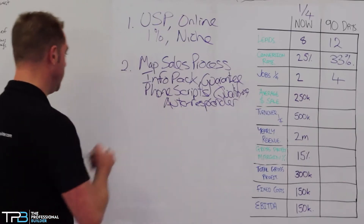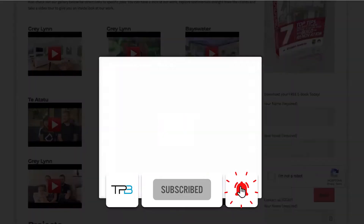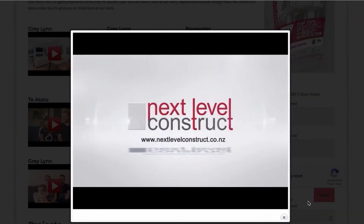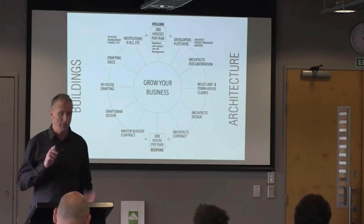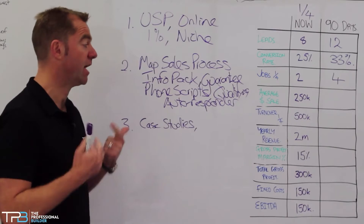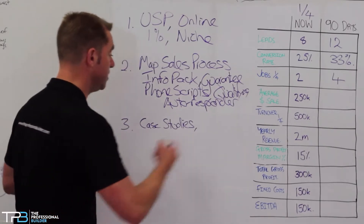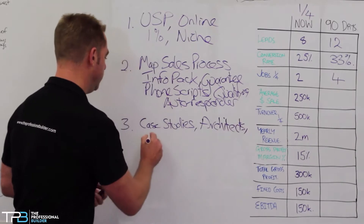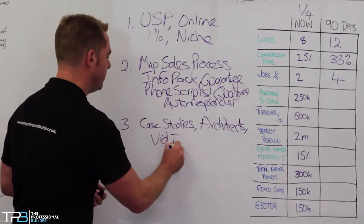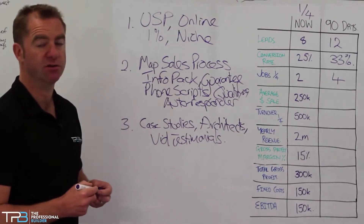The next key area we can work on is average dollar sale. This is where we use case studies, video testimonials, and good strategic alliances with architects. Make sure that you are fishing in the right ponds — meaning you're not competing on price via tenders, because you can't influence the outcome for the client, and you're not going through Builders Crack. Good strategic alliances with the right architects, video testimonials, and referral strategies work phenomenally well to help increase average dollar sales.